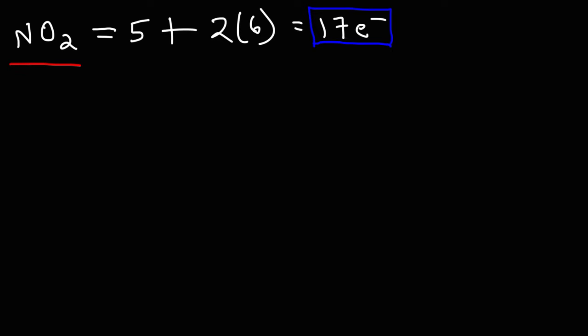Now, what we need to do is calculate how many electrons will be on the central nitrogen atom. To do that, subtract seventeen by the highest multiple of eight just under seventeen. So multiples of eight are eight, sixteen, twenty-four, thirty-two, and so forth. Sixteen is the highest multiple of eight just under seventeen.